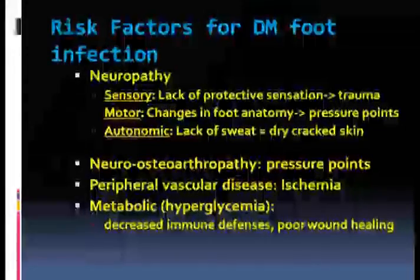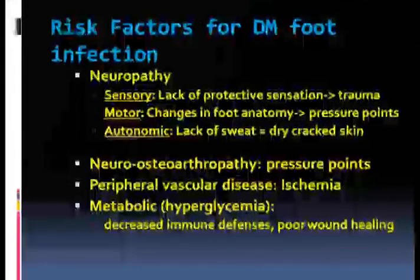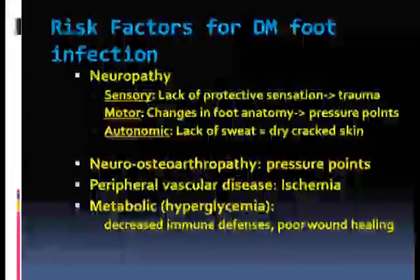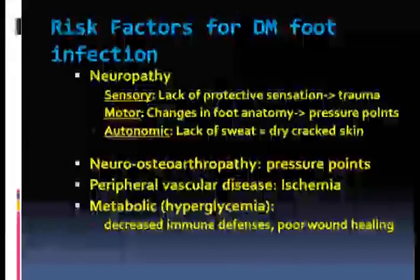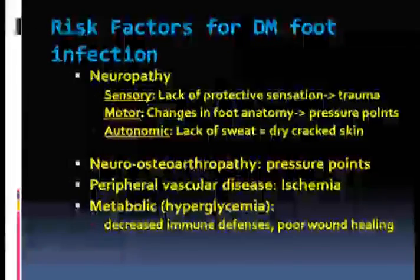What are the different risk factors? Neuropathy and neuro-osteo-arthropathy create pressure points. Peripheral vascular disease leads to ischemia, with poor healing of ulcers and poor coverage of infection. Metabolically, because of hyperglycemia, there are decreased immune defenses and poor wound healing.